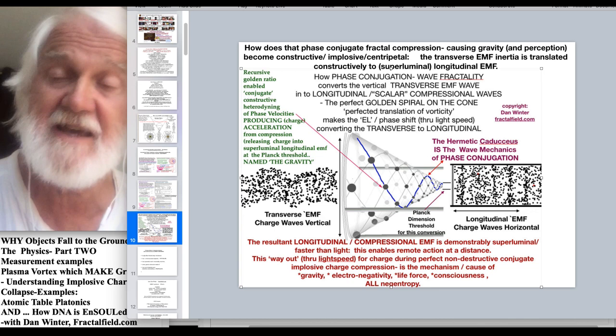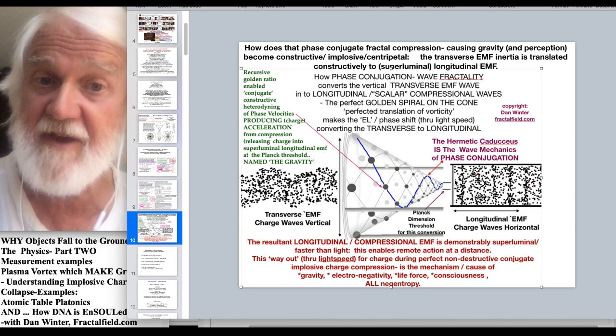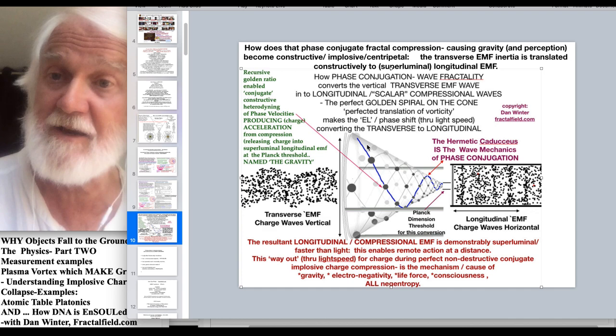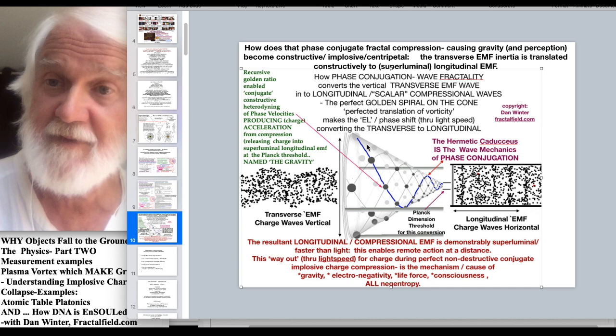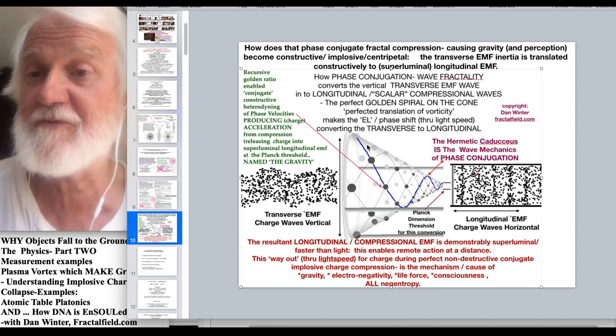And that those faster than light phase velocities then begin to explain the physics of stargates and portals and wormholes. And in fact this then explains better than physics current conventional language which says that nesting or essentially embeddability that enables the Einstein bridge wormhole. We now know that embeddability perfected, nesting perfected, is the problem solved by golden ratio.